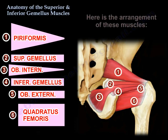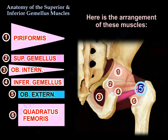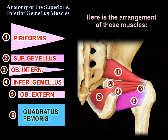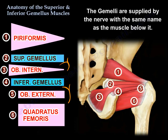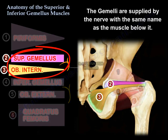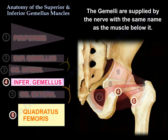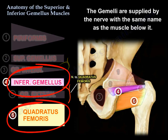Here is the arrangement: the piriformis, the superior gemellus, the obturator internus, the inferior gemellus, obturator externus, and quadratus femoris. The gemellae are supplied by the muscle below them. So the superior gemellus gets the nerve from the one below it — the obturator internus. The inferior gemellus gets its innervation from the muscle below it, which is the quadratus femoris.